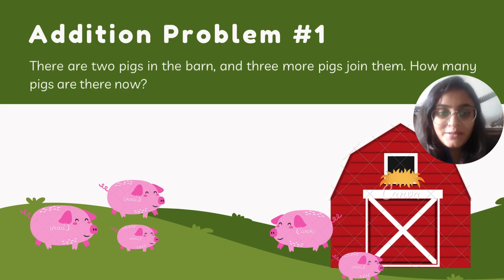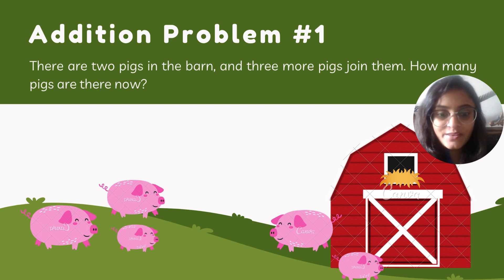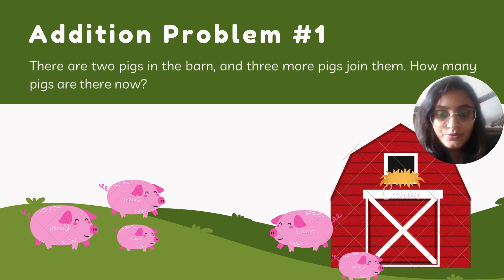Addition problem number one: there are two pigs in the barn and three more pigs join them. How many pigs are there now? So let's count how many total pigs we have in the barn: one, two, three, four, five.